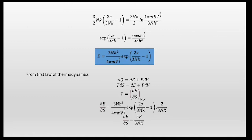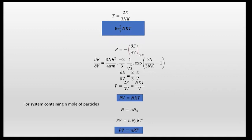From the first law of thermodynamics, dQ = dE + p dV and dQ = T dS, so T dS = dE + p dV. Therefore T = (∂E/∂S) at constant V and N. Computing ∂E/∂S gives (2/3nk) · E, so T = 2E / 3nk. Rearranging, E = (3/2) nkT. This is the equipartition theorem, confirming that energy is distributed equally among each degree of freedom.